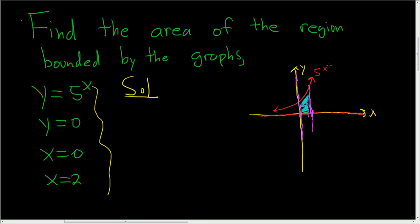So we just have to integrate 5 to the x from 0 to 2, and we should have it. So the area is going to be the definite integral from 0 to 2 of 5 to the x with respect to x.